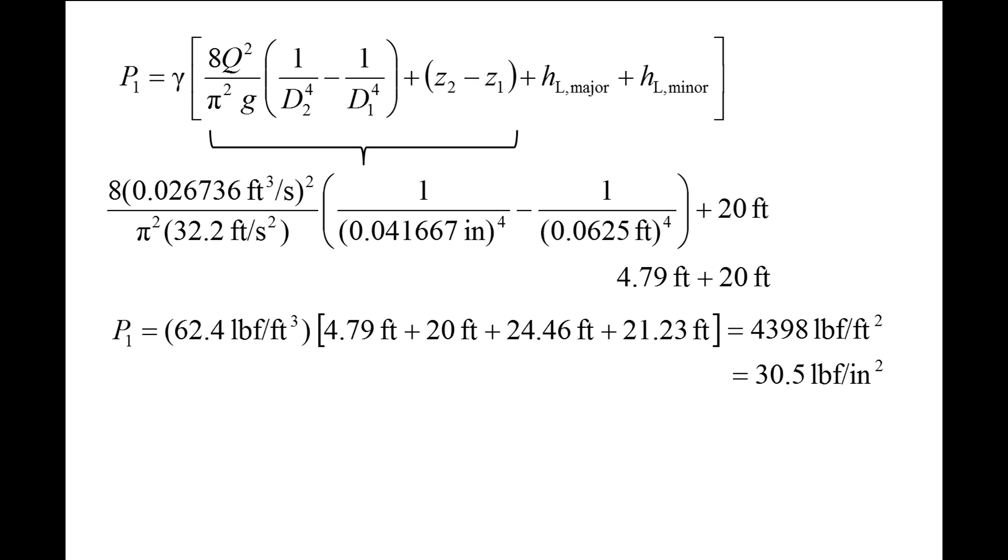We can obtain additional insight into this problem by examining the pressure associated with each term in the equation. If we multiply the major head loss, 24.46 feet, with the specific weight, we obtain 10.6 psi. This means 10.6 psi is required to overcome the frictional losses due to the straight pipes. If we multiply the minor head loss, 21.23 feet, with the specific weight, we obtain 9.2 psi. This means 9.2 psi is required to overcome the frictional losses due to the six components.